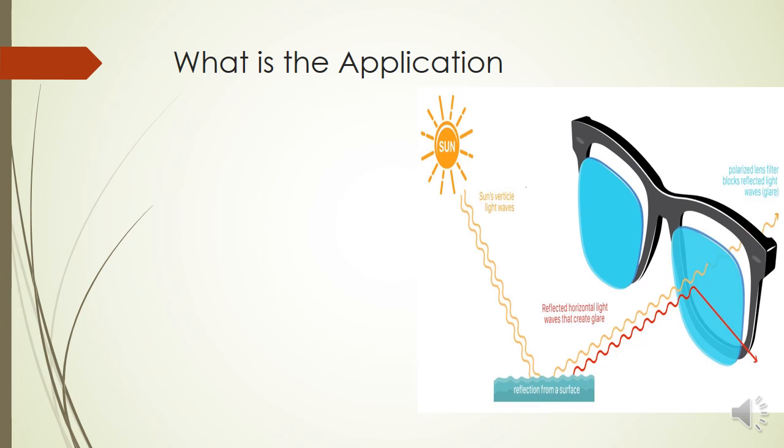The unpolarized light will start getting changed into horizontal as well as vertically polarized light which is partially polarized. The horizontal polarized light will act as a disturbance or glare for you, whereas the vertical light is the one which is required to see clearly. When we introduce a particular polarizing filter, depending on the axis, it will cut off one particular ray and allow the other one to go inside.